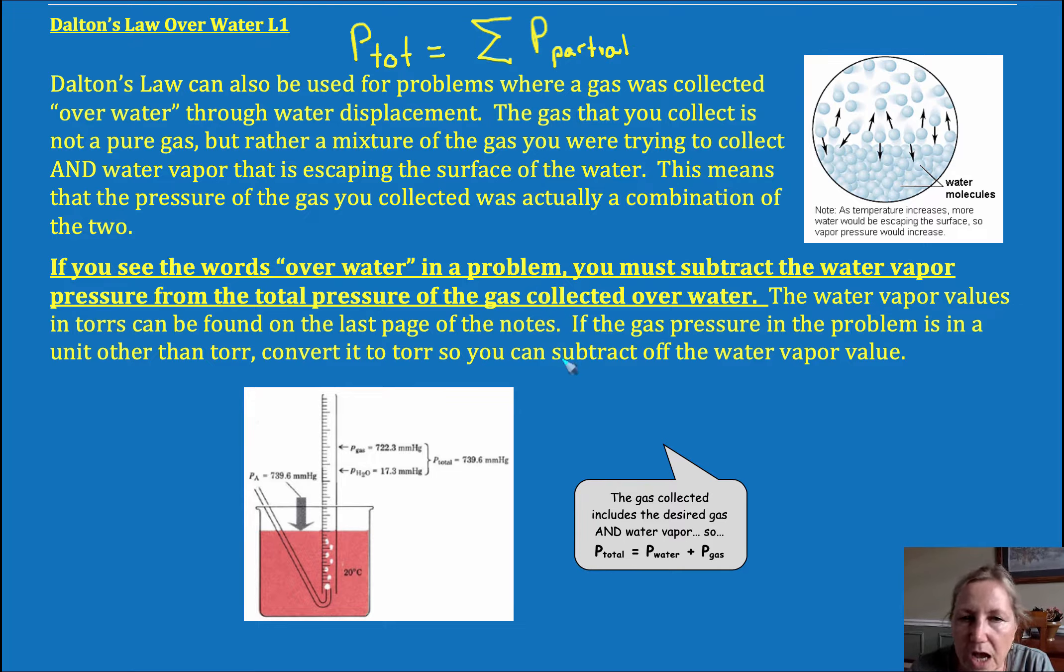Now I call this Dalton's Law over water because this would be applied to a situation in which a gas is collected by displacement of water. So what happens is, and I'll see if I can blow up the picture here, you would have a gas collection tube here and there would be water inside the gas collection tube, and the tube would be inverted. You would start with it completely full of water. And as the gas is collected, it's less dense, it's going to displace the water. So the gas ends up being collected over water.